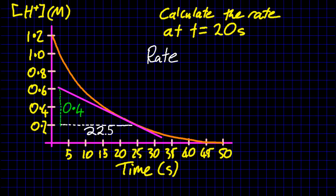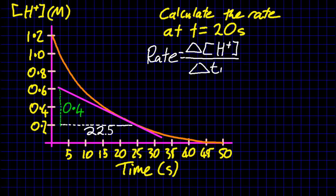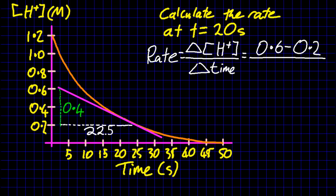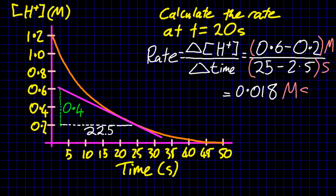So rate is a change in acid concentration over a change in time. 0.6 minus 0.2 and 25 minus 2.5. Ignoring all sig fig conventions. The IB seems to care less and less about that. And so to work out the unit, it's molar per second. And we're done.